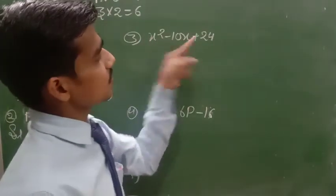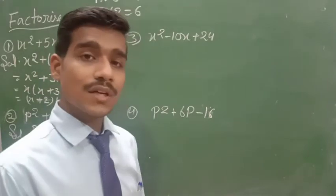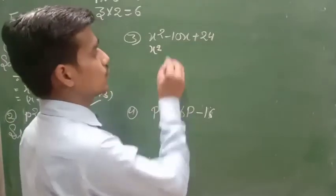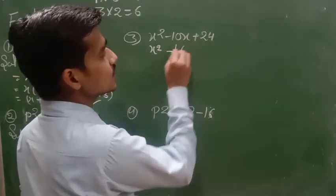Here, x² - 10x + 24. Which table gives 24? And when we add those numbers we should get 10. 6, 4 gives 24. You will write here 6 and 4.